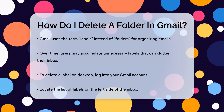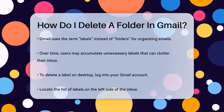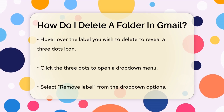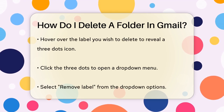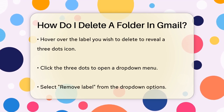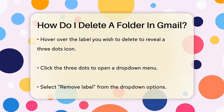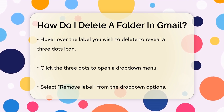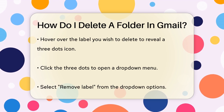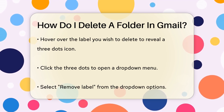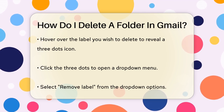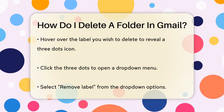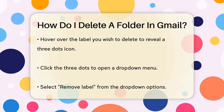If you're using Gmail on your desktop, start by logging into your Gmail account. On the left side of your inbox, you'll see a list of your labels. Move your mouse pointer over the label you want to delete, and you'll see a small three dots icon appear on the right side of the label. Click on these three dots — a dropdown list will appear, and you'll need to select the option that says Remove Label.